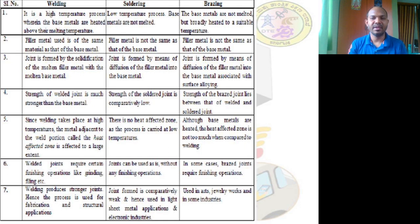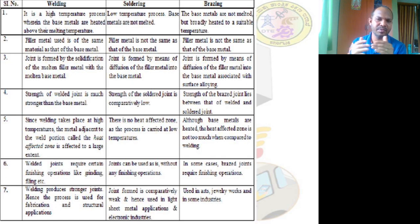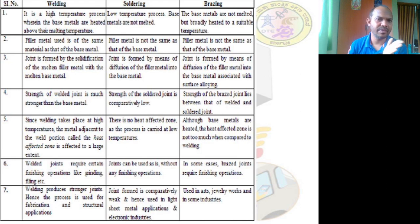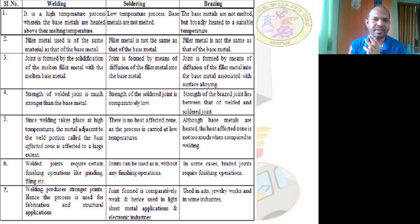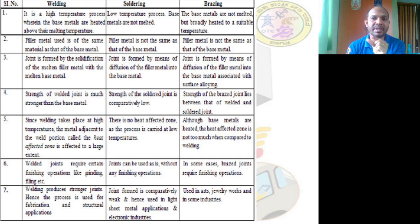In soldering, the joints are hidden inside devices. When you open a mobile, TV, laptop, or computer, you see silver-colored dots on the circuit board — those are soldered joints. In brazing, you can see where the joint has been made because the filler material differs from the base material, making the brazed area visible, unlike welding where the joint is indistinguishable.